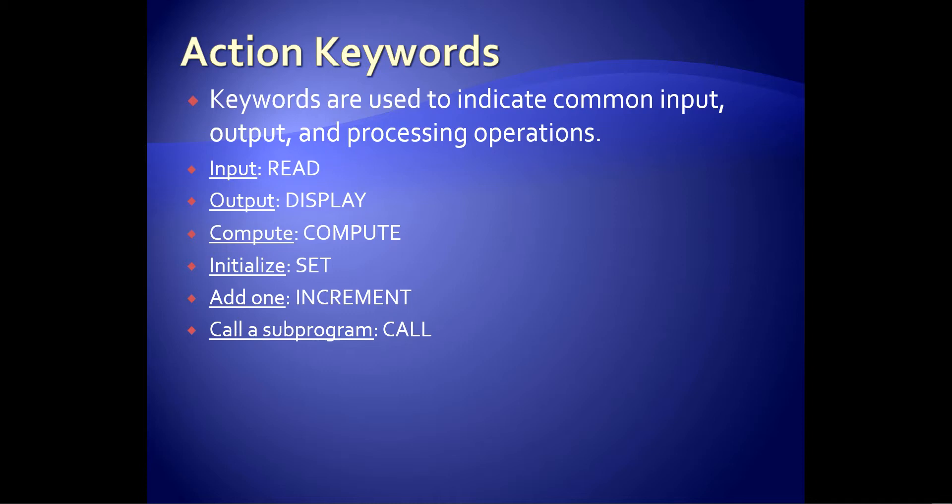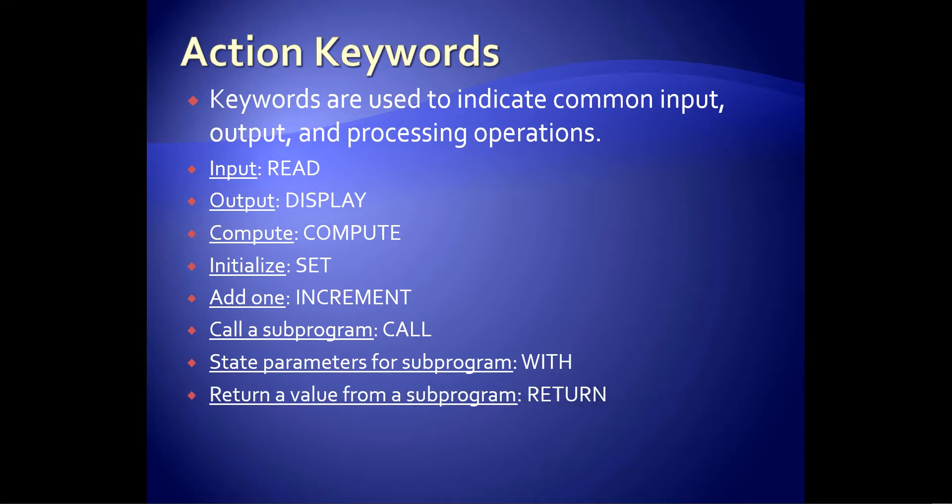Call a subprogram. Call. I don't know how else to say that. That's about as easy as it comes. State parameters for your subprogram. Width. So you might say call calculate area with length and width. Return a value from a subprogram. Return. See, what you can see, you're looking at these, these all seem pretty obvious and straightforward. That's the idea, right? It should be common sense. So the idea is that when somebody reads a pseudocode, it's just clear. It's instantly clear. Readability.